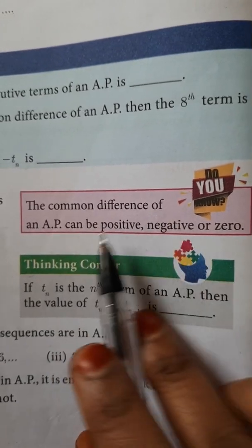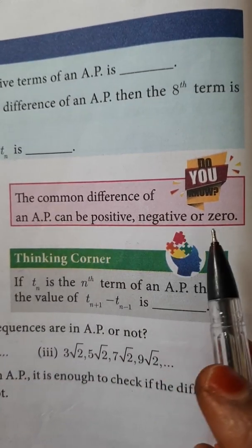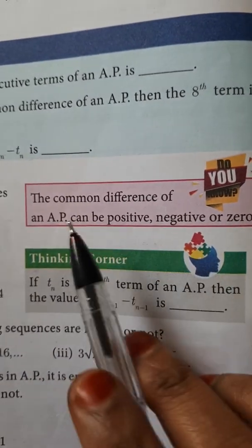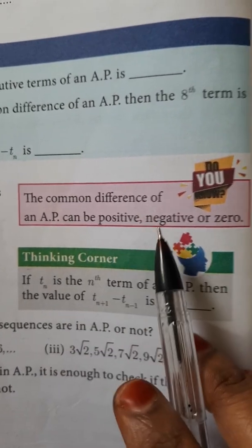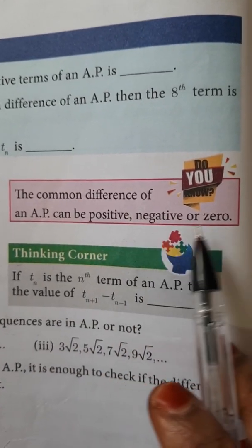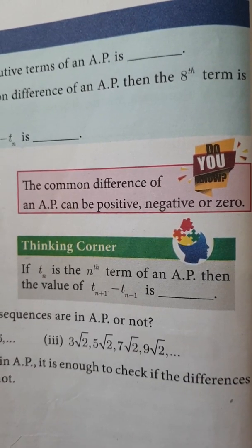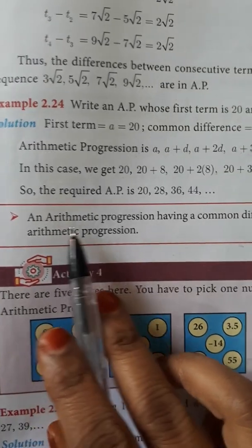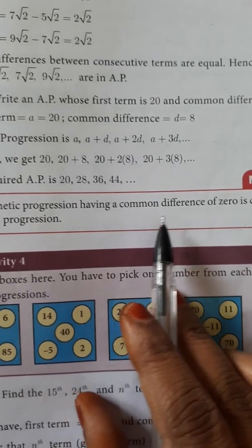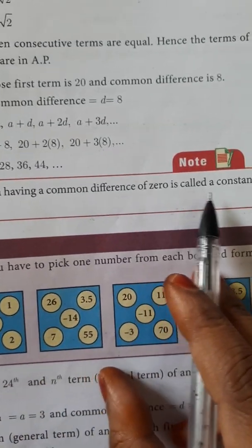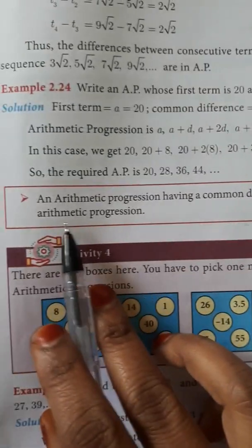The common difference of an AP can be positive, negative, or zero. When the common difference is zero, the AP is called a constant arithmetic progression.